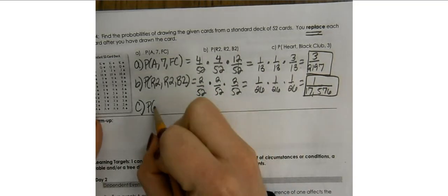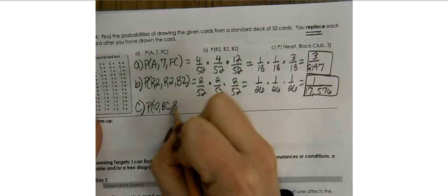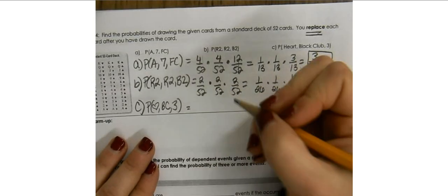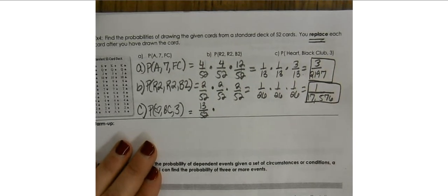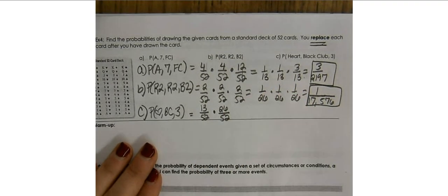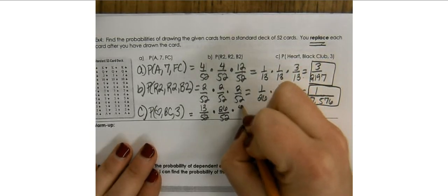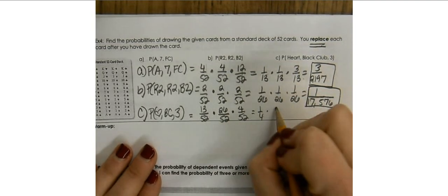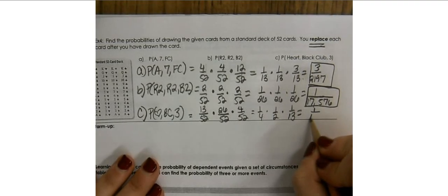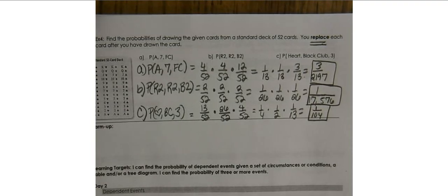Part C: What is the probability of drawing a heart, then a black card, then a 3? There are 13 hearts out of 52, 26 black cards out of 52, and 4 threes out of 52. Simplifying: 13/52 = 1/4, 26/52 = 1/2, and 4/52 = 1/13. Multiplying gives 1/104. If you have any questions, please feel free to email me — I hope you have a wonderful day.